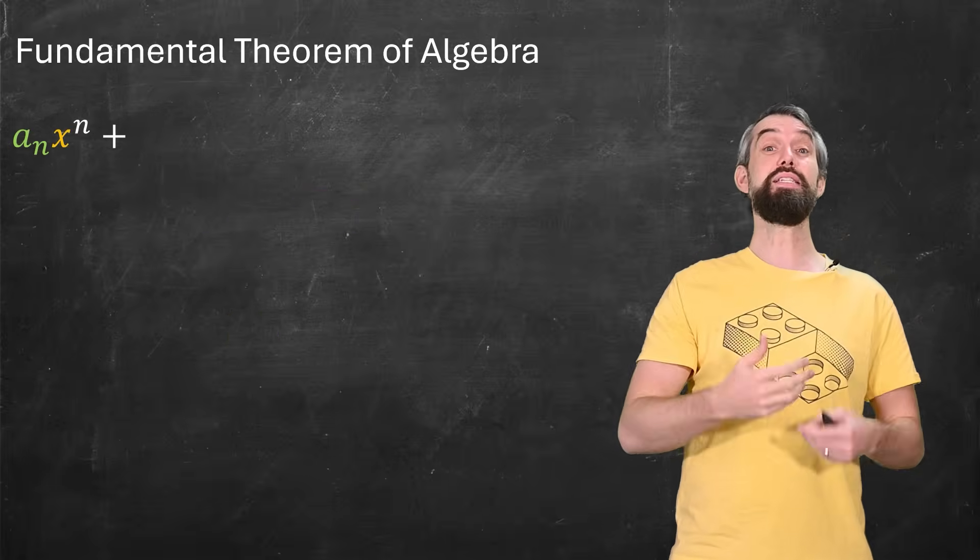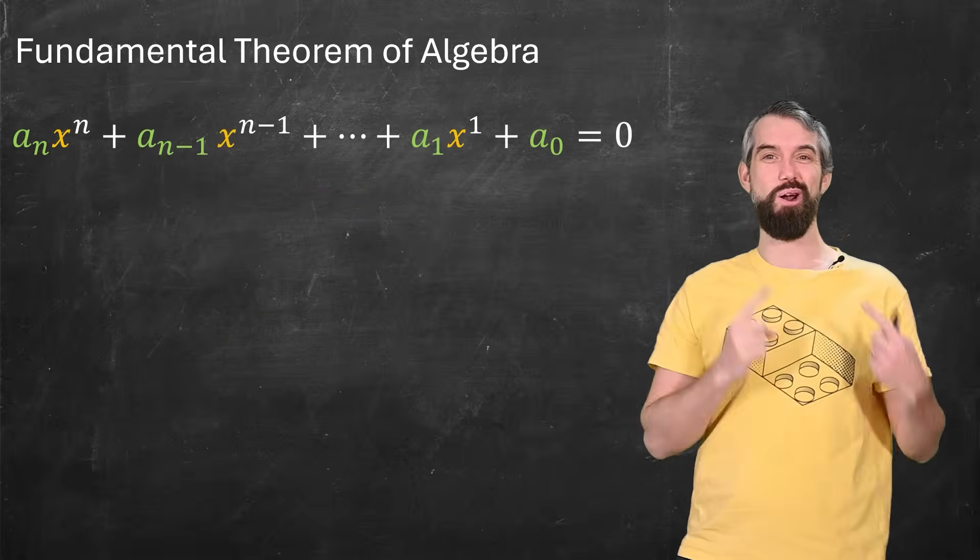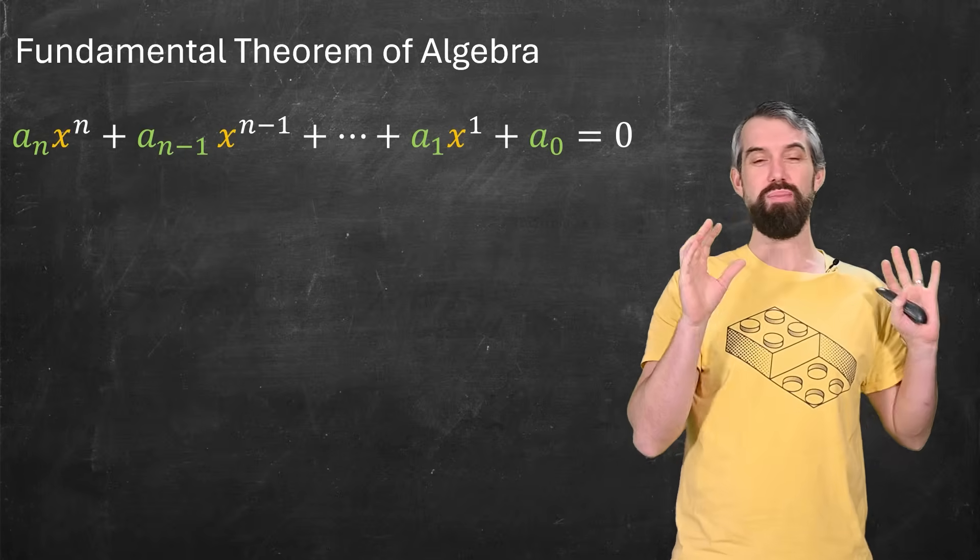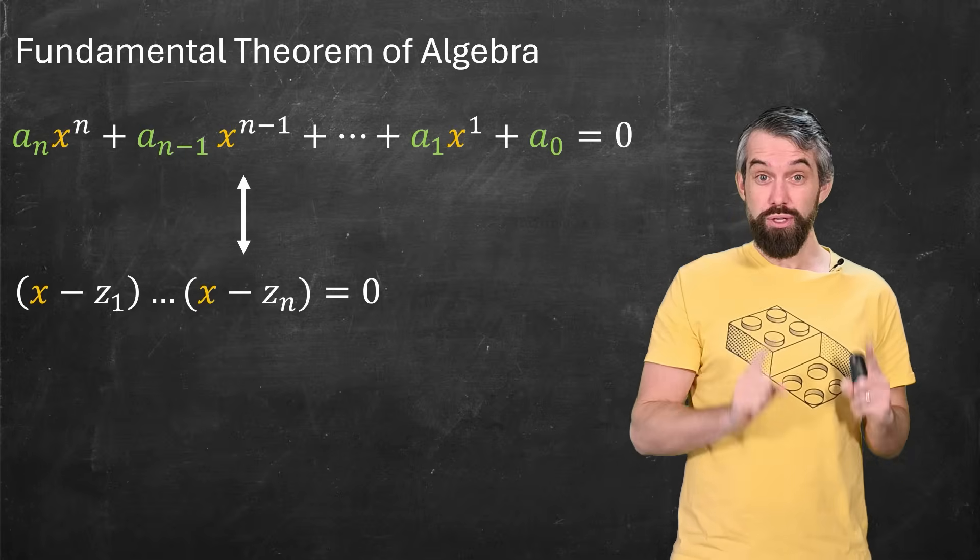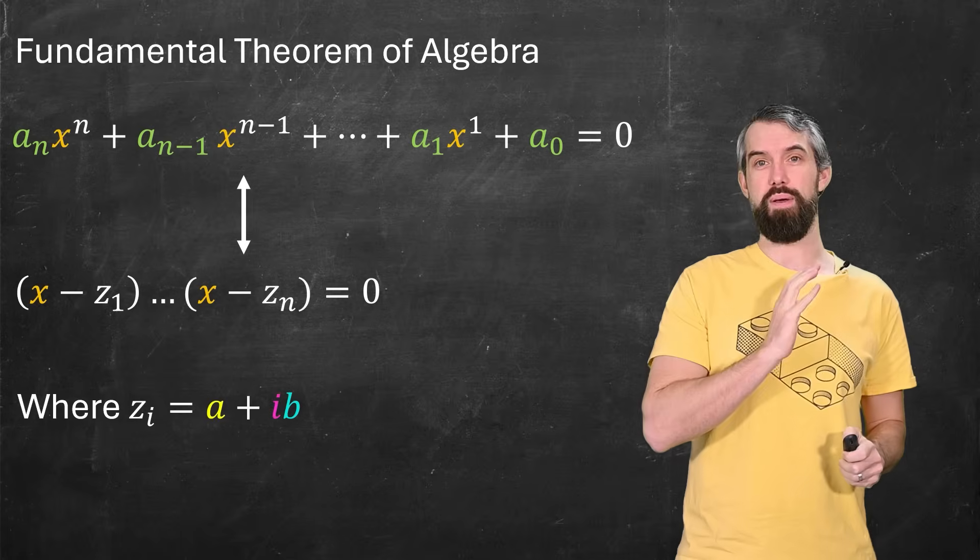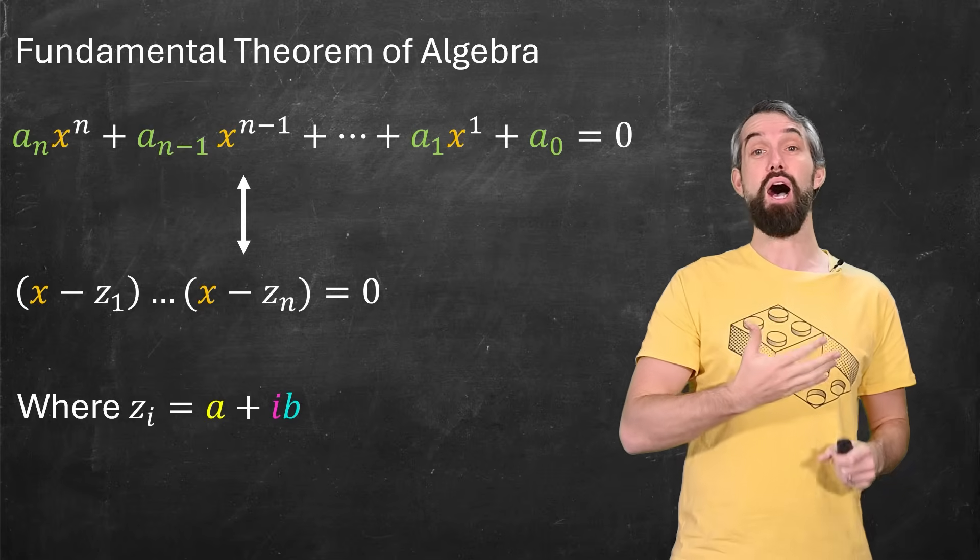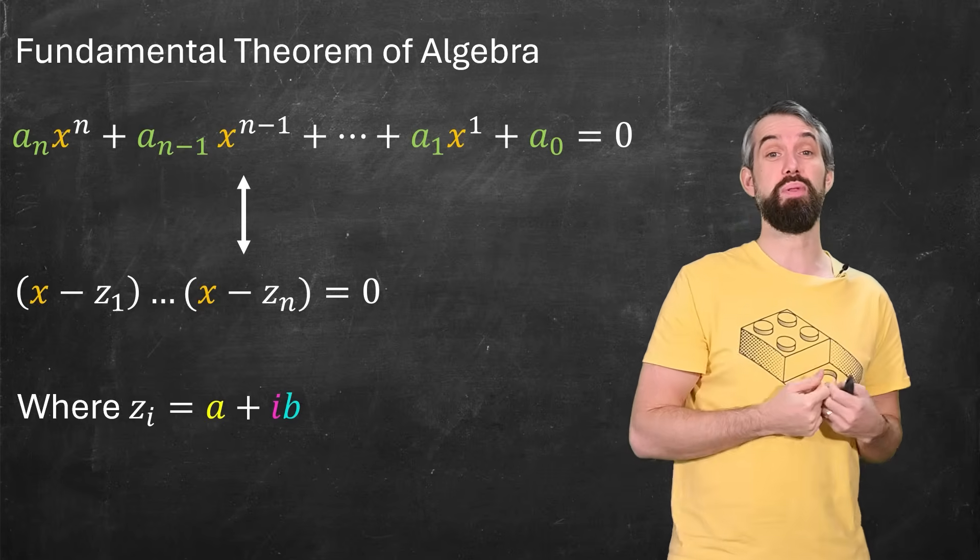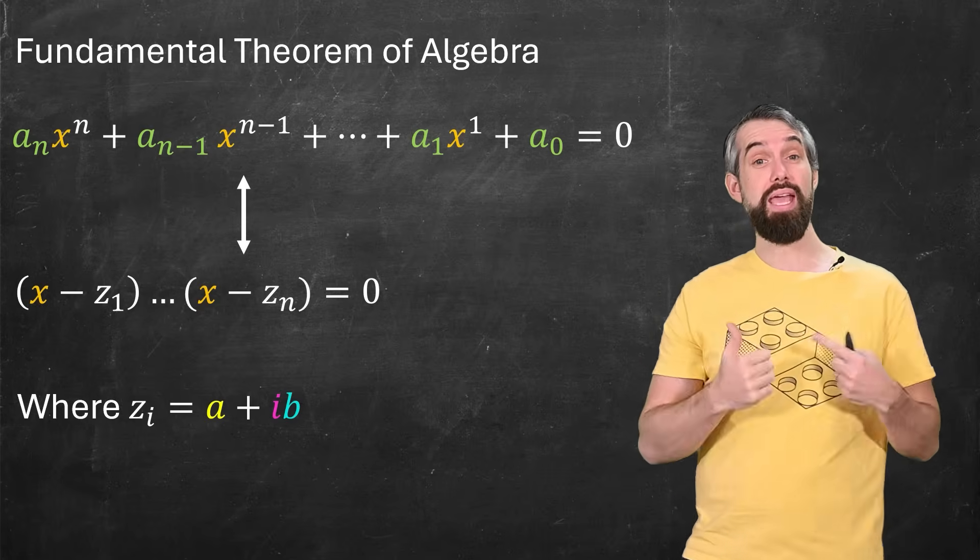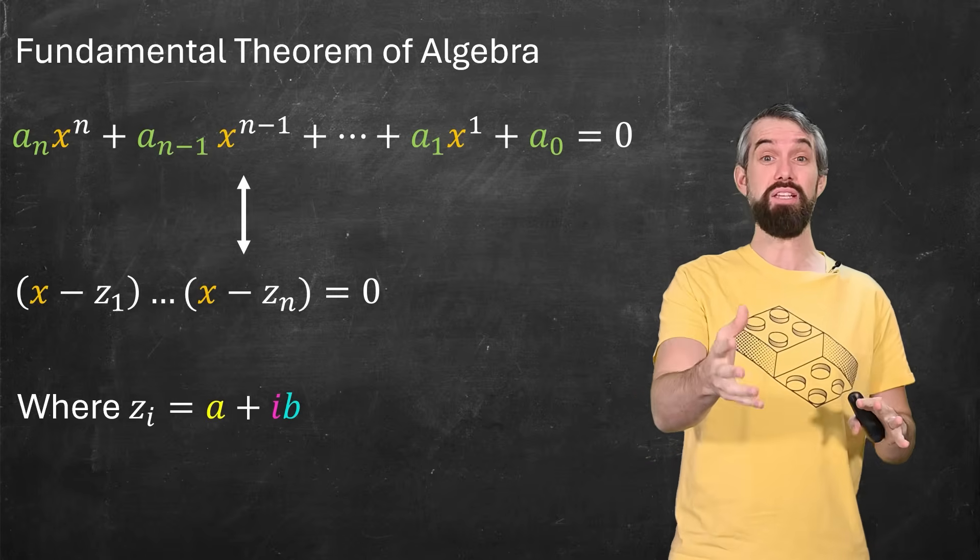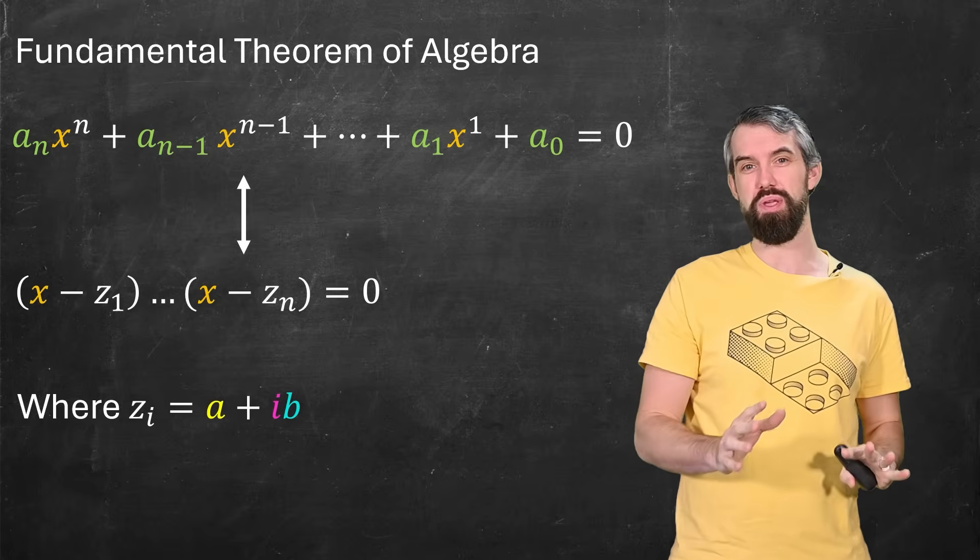And amazingly, it doesn't matter how complicated our polynomial is, x to any power of n, our coefficients can be real numbers or complex numbers. The introduction of i solves all of them. The solution to this can just be given as a list of complex numbers, we typically call them z, that are of the form a plus ib. So the introduction of this one imaginary number i solved all roots for all polynomials.